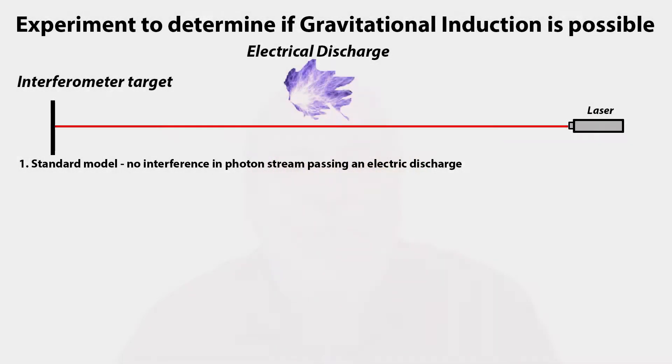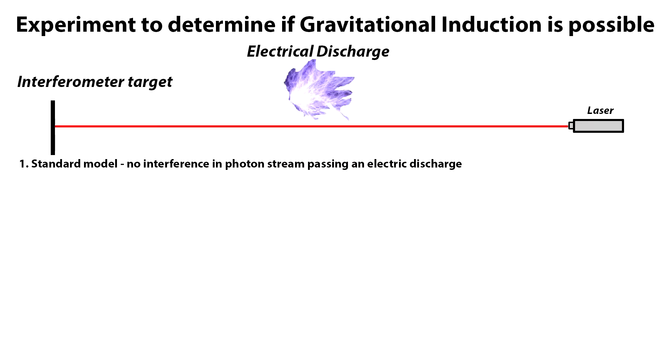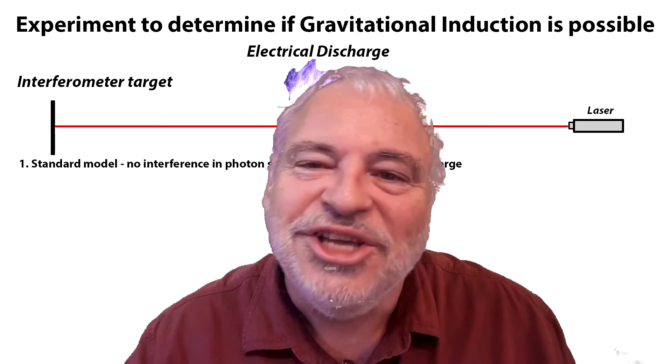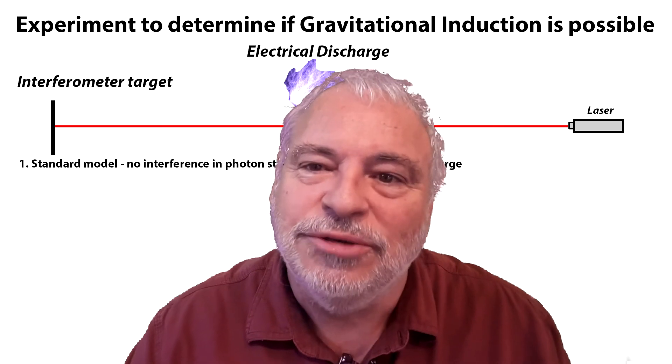According to present theory, photons are not responsive to electromagnetic fields — only gravity can alter the path of an unobstructed photon. Consequently, a laser beam of photons passing an electrical discharge and arriving at an interferometer is expected to denote no deviation caused by the discharge. This is an untested assumption.